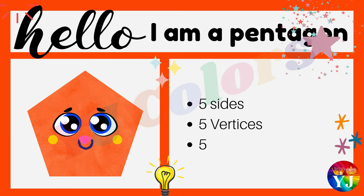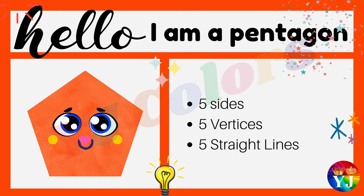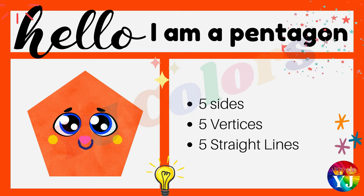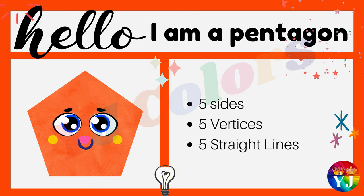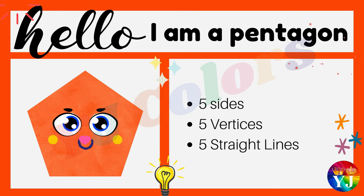Hello, I am a hexagon. I have five sides, five vertices and five straight lines.